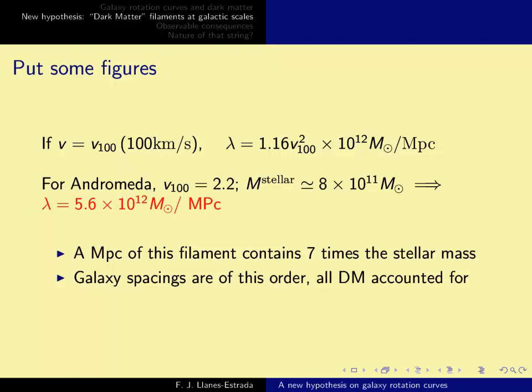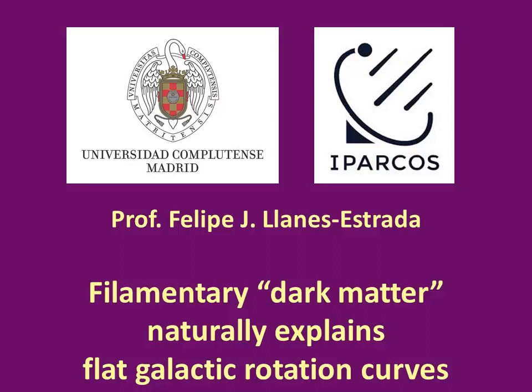If we put it together with Andromeda's stellar mass, that means that the megaparsec of this filament contains 7 times the stellar mass. And because galaxy spacings are of this order, this means that these filaments basically account for all dark matter that we see.